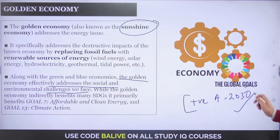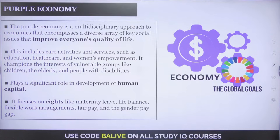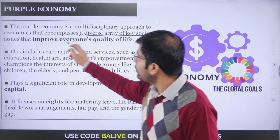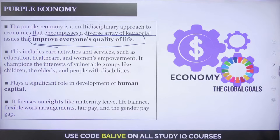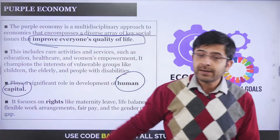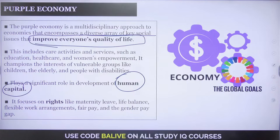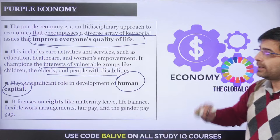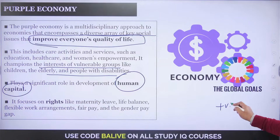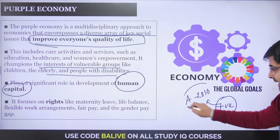Purple economy is a multidisciplinary approach encompassing diverse key social issues that improve everyone's quality of life. It means building human capital, investing in people, and sustainable development. It champions the interests of vulnerable groups like children, the elderly, and people with disabilities. Rights-based issues become the center of the conversation in a purple economy, and it affects Agenda 2030 in a positive manner.